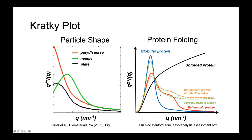In blue, a globular protein gives a standard bell curve. As you unfold that protein, shown in black, the curve changes drastically — it increases with increasing Q rather than forming a bell shape. A multi-domain protein in red has two peaks. A multi-domain protein with a flexible linker shows increased intensity due to added scattering. This allows you to characterize different folding states using the Kratky plot. It's more qualitative, but with models you can get quantitative analysis.